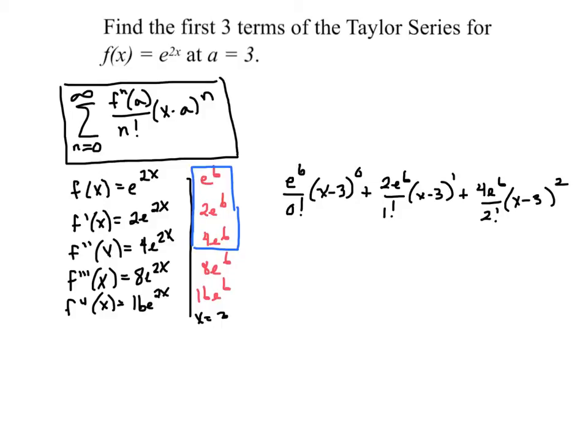Now, it only asks us for three terms, so this will probably be enough. Now, it doesn't look like anything's going to zero out, so let's simplify. e to the 6th, remember, 0 factorial is 1, anything to the 0 power is 1, so that first is just e to the 6th.